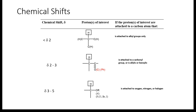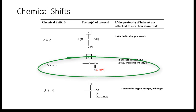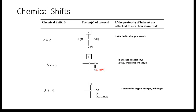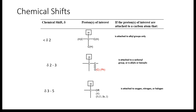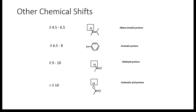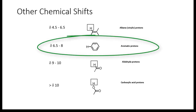Looking at chemical shifts: from two to three ppm is where you expect to see those acetyl protons, because that carbon is next door to a carbonyl. The carbon with the CH3 is next to a carbonyl, so you expect those protons to show up somewhere between two and three. Aromatic protons again show up from about six and a half to eight ppm.